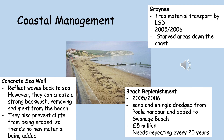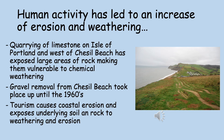Beach replenishment is effective but needs to be repeated every 20 years at a cost of 5 million pounds. Some human activity along the Dorset coastline has actually led to increased erosion and weathering. An example is the quarrying of limestone along the Isle of Portland and west of Chesil Beach, which has exposed large areas of rock making them more vulnerable to weathering, particularly chemical weathering. Gravel removal from Chesil Beach also took place up until the 1960s. Tourism has led to many people walking along coastal paths, causing coastal erosion and exposing underlying soil and rock, making them more vulnerable to further weathering and erosion.